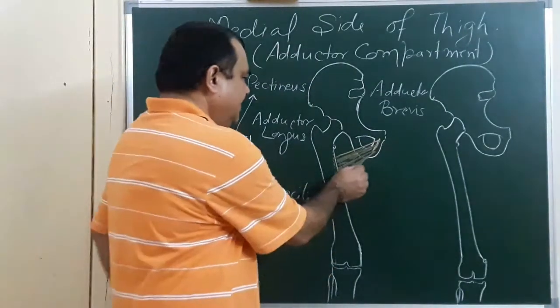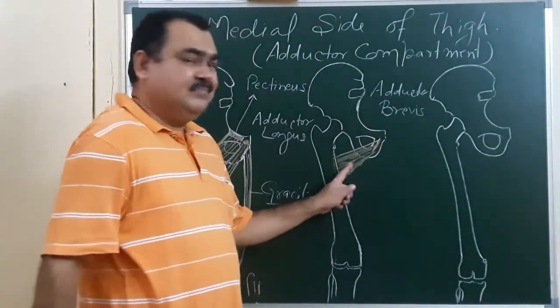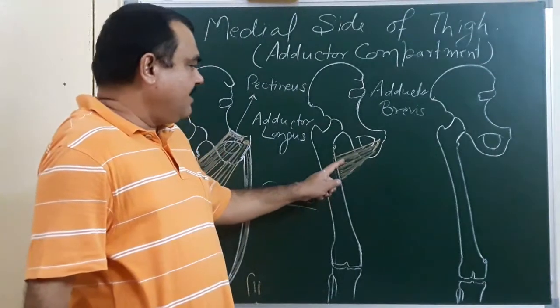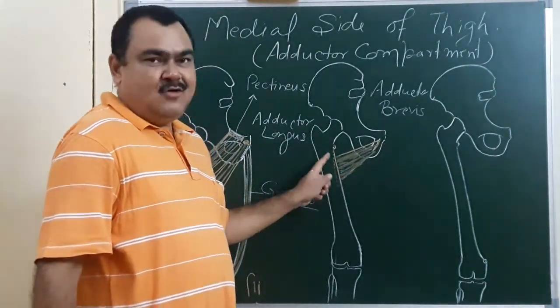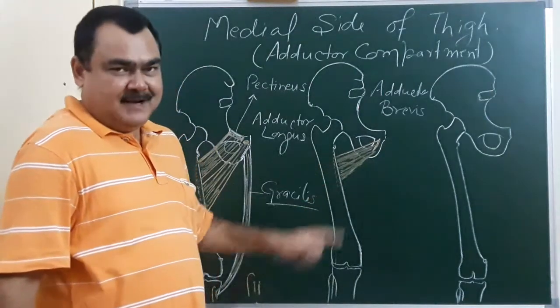This is adductor brevis. Action of this adductor brevis is again its action is adduction, lateral rotation and flexion.